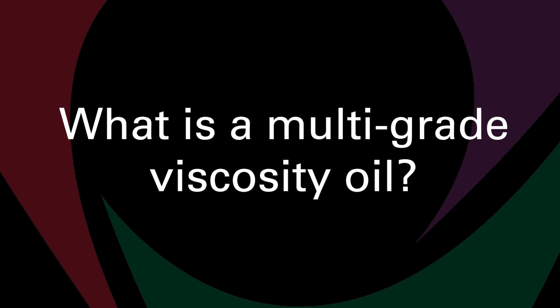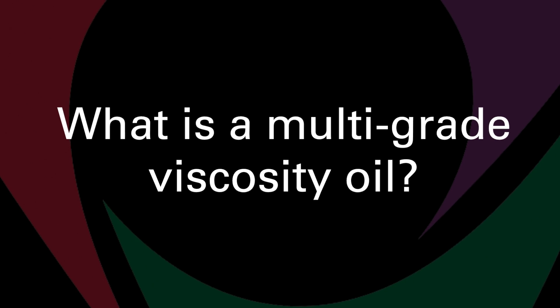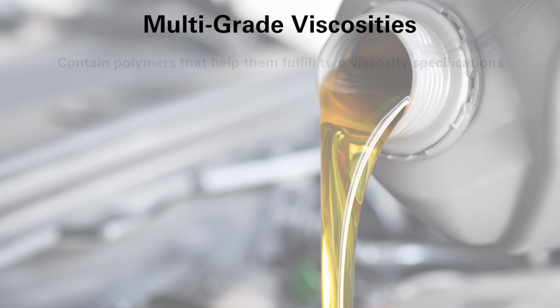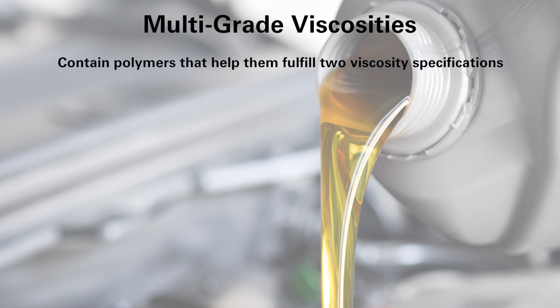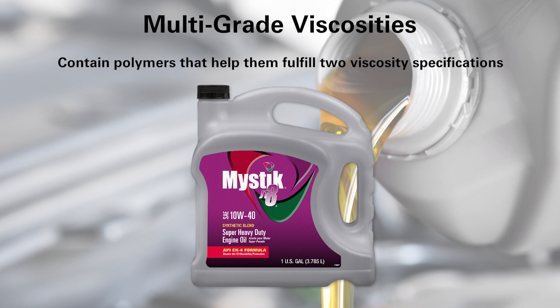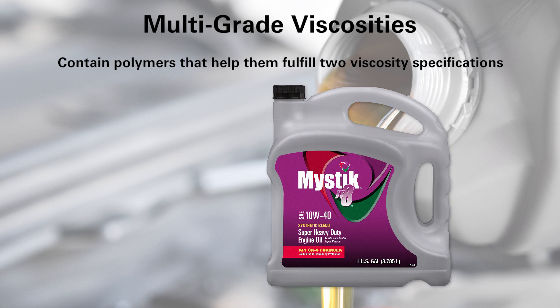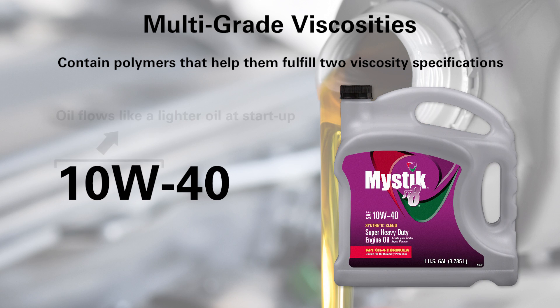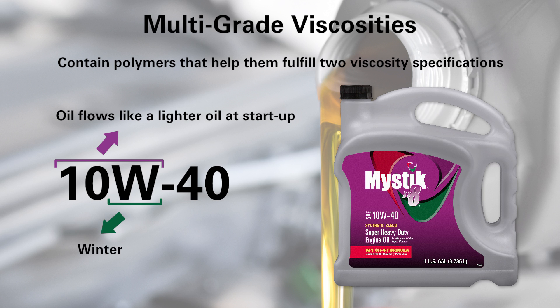What is a multi-grade viscosity oil? Multi-grade viscosities contain polymers that help them fulfill two viscosity specifications. 10W-40 is an example of a multi-grade viscosity oil, since it is designed to flow more easily at startup when the engine is cold. The 10W means that the oil flows like a lighter oil at startup — and the W actually stands for winter. Once the engine is up to operating temperature, a 10W-40 oil flows like a heavier SAE-40 oil.